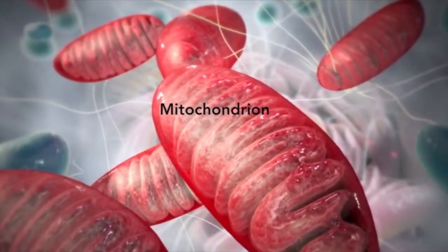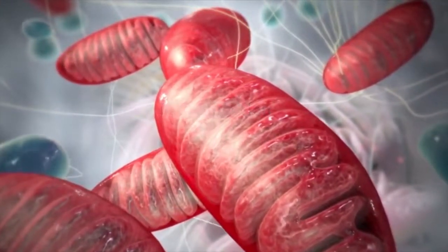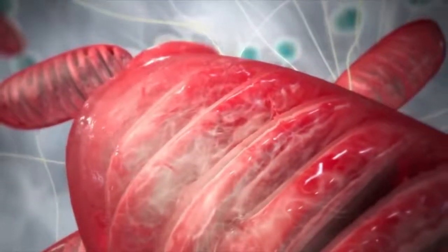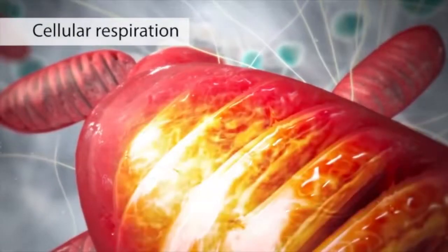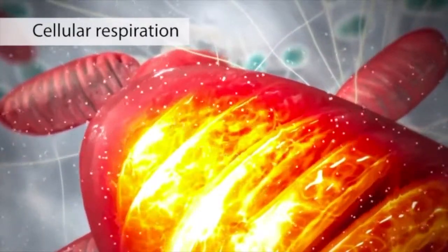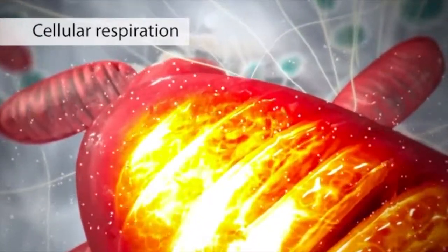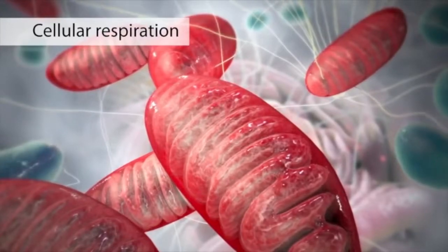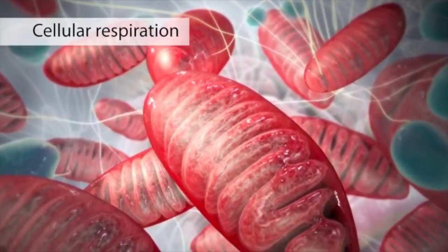The organelles that capture and release energy: Chloroplasts and mitochondria. Chloroplasts capture energy from the sun to convert food and mitochondria are involved in a process called respiration. Respiration is the process of converting sugars to ATP, the energy form used by cells for all activities.